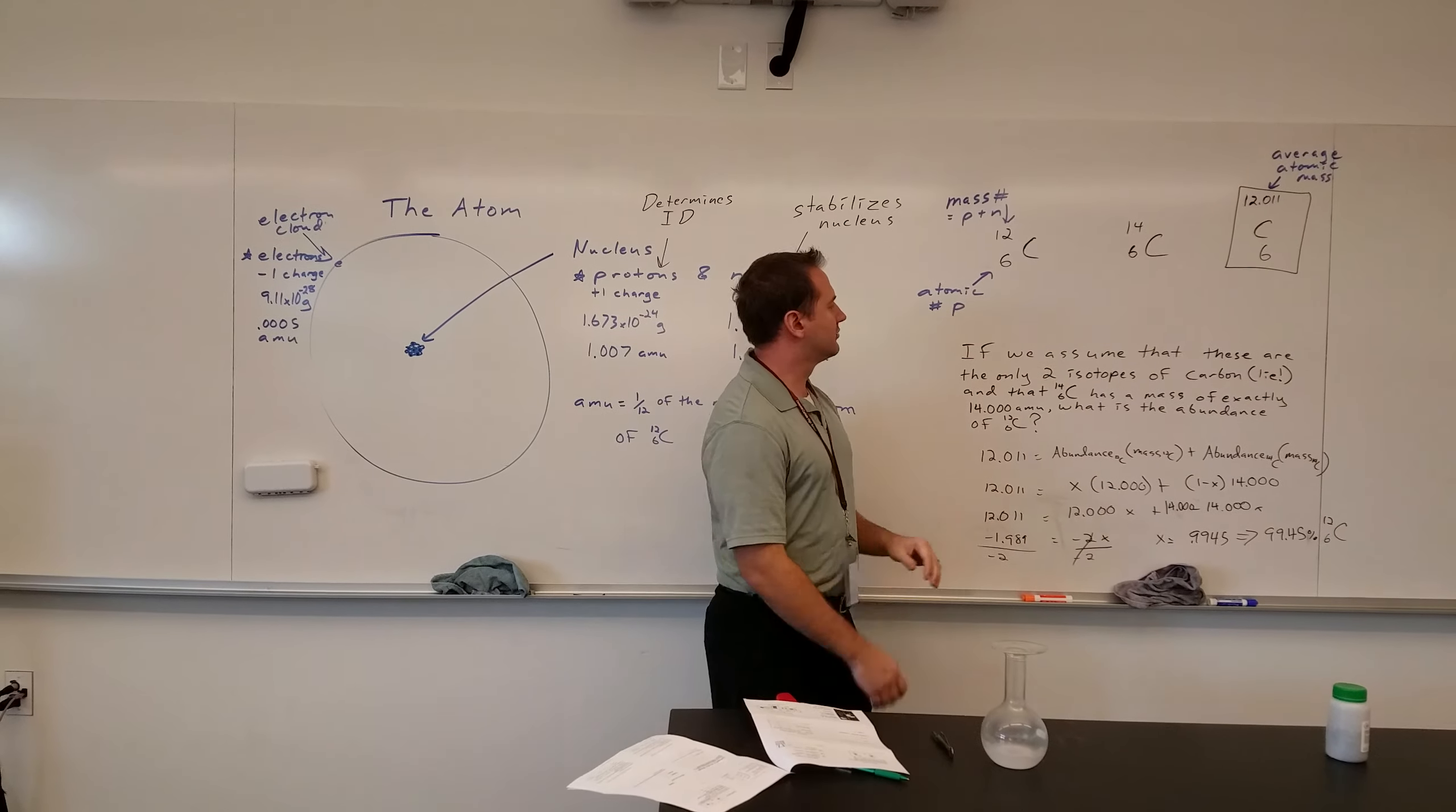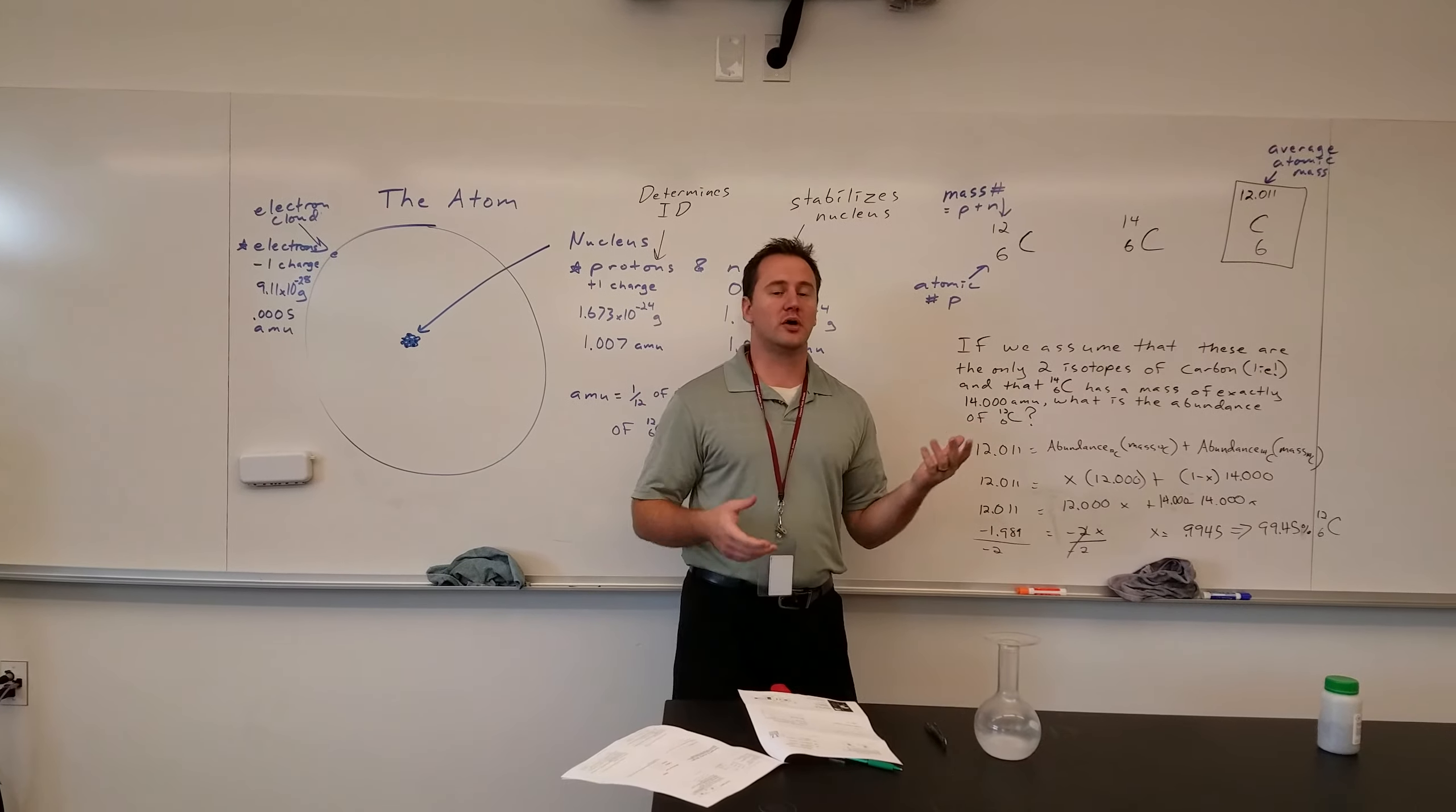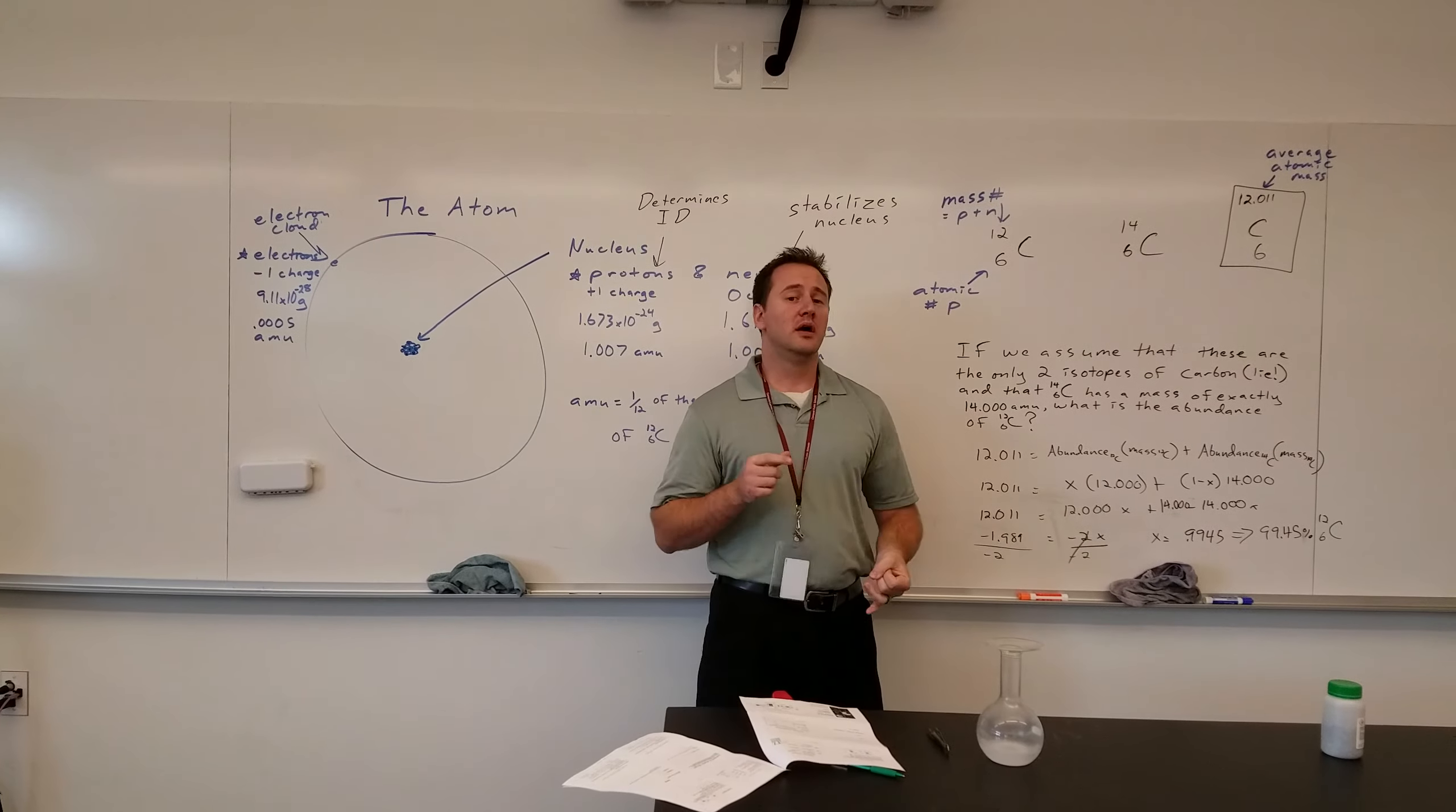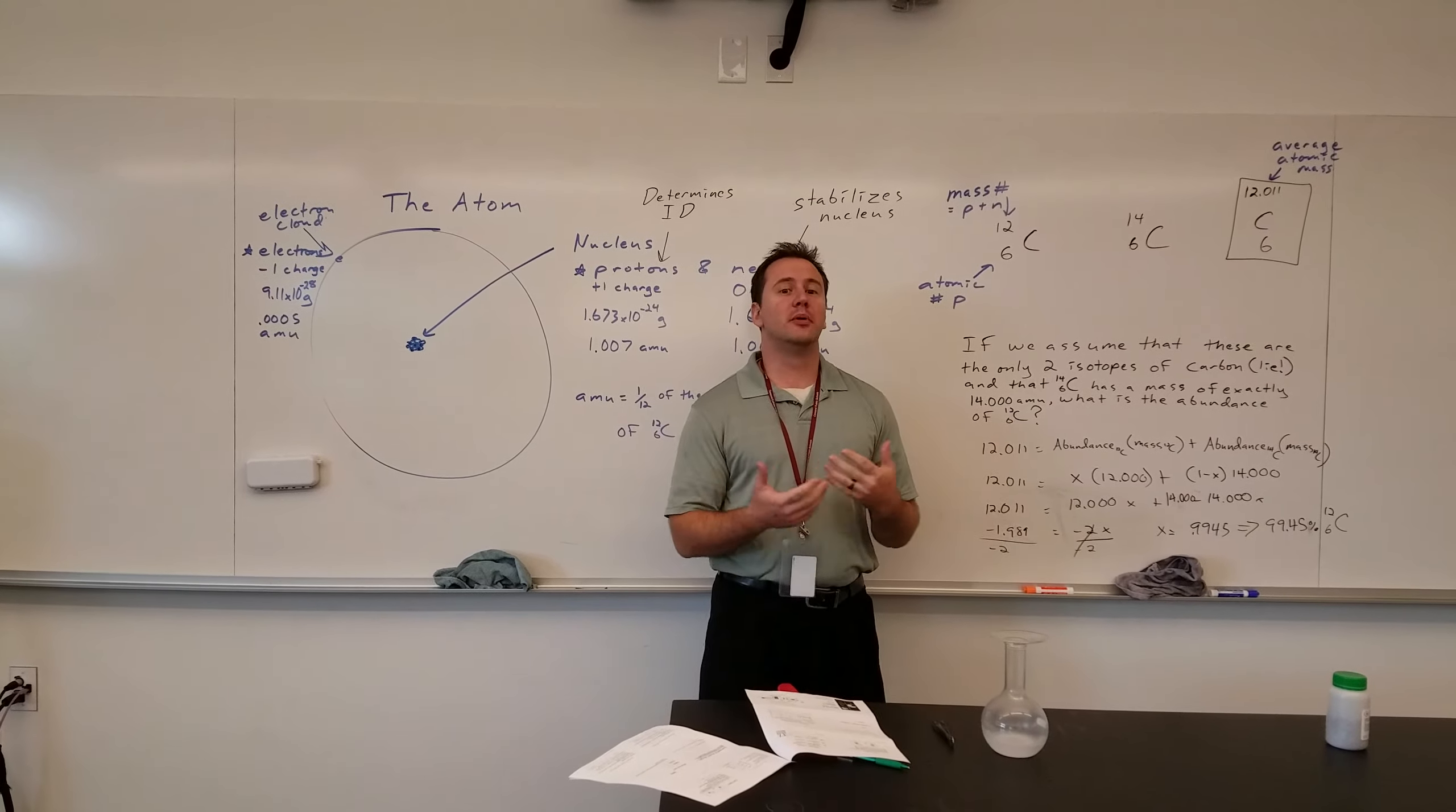So, the sample problem I'd like to do for this video is say that if you assume that those are the only two isotopes of carbon, carbon-12 and carbon-14, and we assume that carbon-14 has a mass of exactly 14 atomic mass units, and carbon has an atomic mass of exactly 12, how could we determine the abundance of each type?